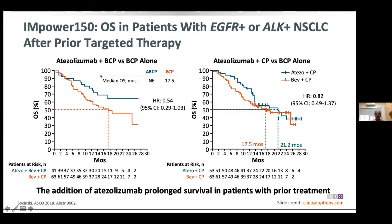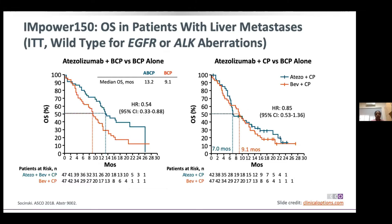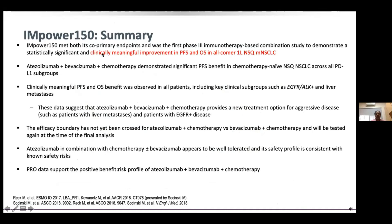For patients receiving atezolizumab plus bevacizumab plus chemotherapy versus no atezolizumab, there was a clear difference. For those who did not get bevacizumab the difference was less pronounced. In patients without any EGFR or ALK alterations, the improvement was 13.2 months versus 9.1 months in favor of atezolizumab. The summary was a clinically meaningful improvement in PFS and OS in all-comers in first-line metastatic non-small cell lung cancer.